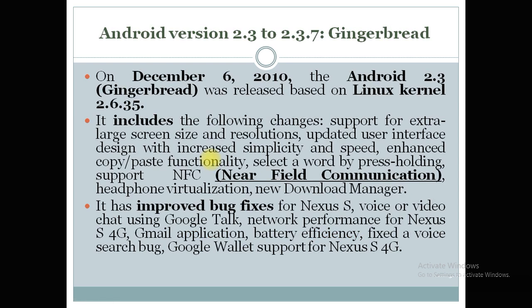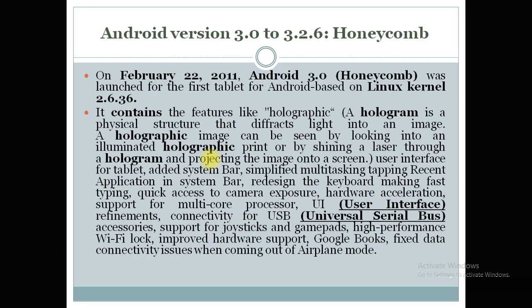Today we are going to start with the next version, called Honeycomb. This version covers version numbers 3.0 to 3.2.6, is based on the Linux kernel 2.6.36, and was launched in February 2011. This version was specifically launched for the first tablet based on the Android operating system — before Honeycomb there was no Android OS used for tablets.